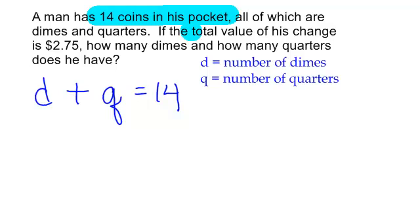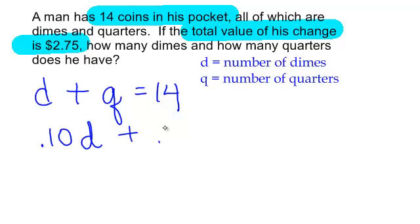I also know the value of the change. How much money does he have in his pocket? He has $2.75. This is the value. How much is a dime worth? It's worth 10 cents. So to get the value of a dime, it will be 10 cents times how many dimes you have. So you have 5 dimes, 10 cents times 5 dimes, 50 cents. How much is a quarter worth? 25 cents. So 0.25 times how many quarters do you have, that's the value of your quarters. Put them together and they should equal the value of the money in his pocket, which is $2.75.